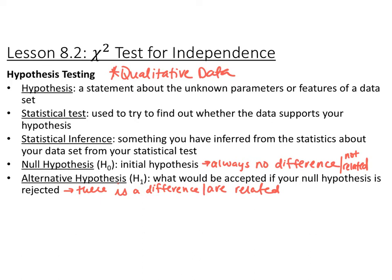In lesson 8.2 we're going to move away from quantitative data and start talking about qualitative data — not numbers but qualities — and we're going to introduce the chi-squared test for independence. Chi is the Greek letter here, not a capital X. First, pause the video and write down these notes.